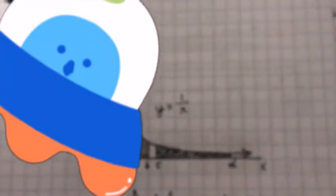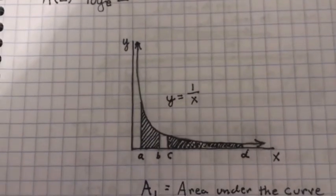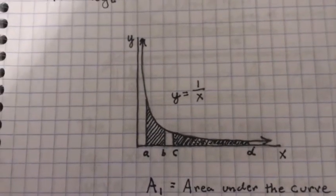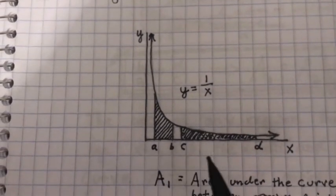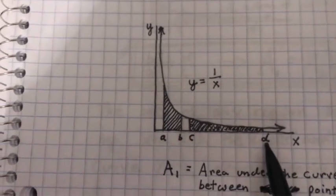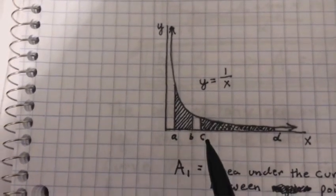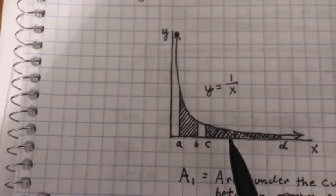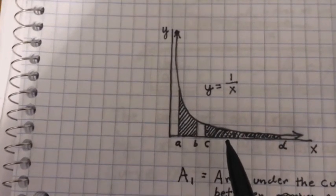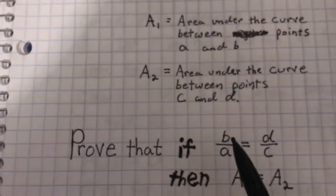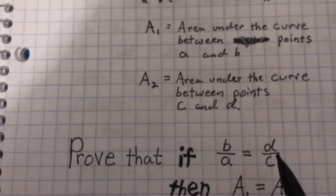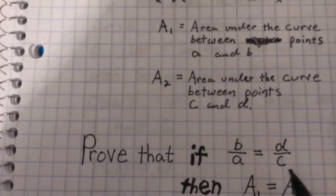Alright, moving on. Your first challenge is to prove that given a region between a and b and given a region between c and d, the area of the region between a and b is equal to the area between the region c and d, if and only if b over a equals d over c.